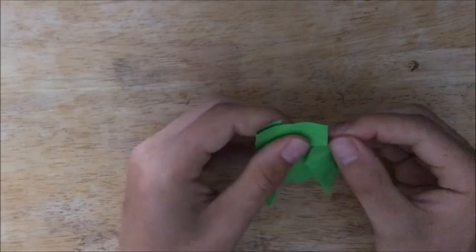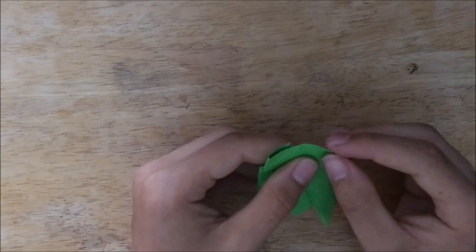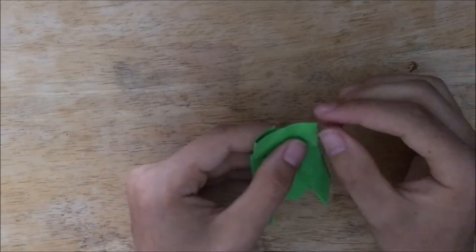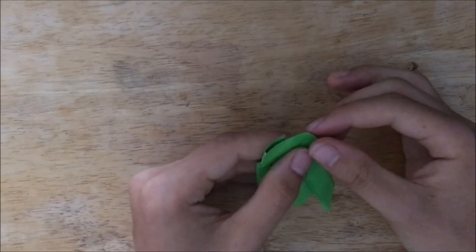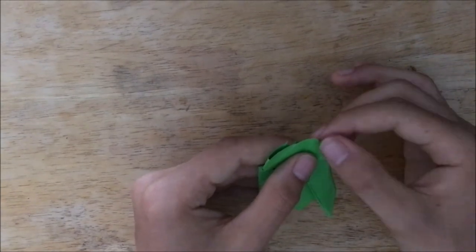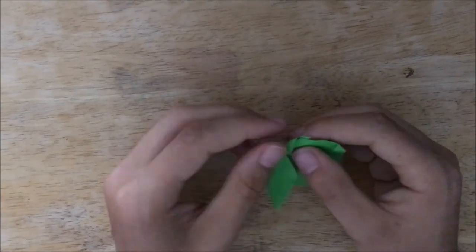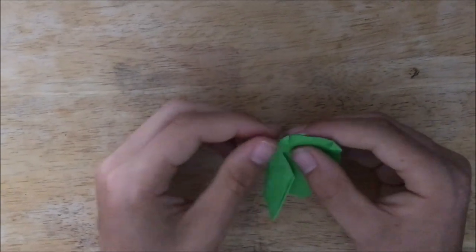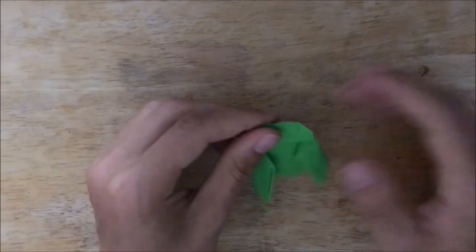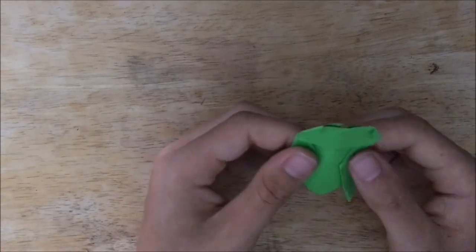And then the next part will be doing the eyes. So just take the corners of the head and fold them down. And now what you can do is you can take like a Sharpie or a marker and put a little dot on them so it looks realistic, but sometimes I don't do that.